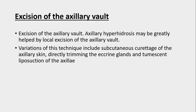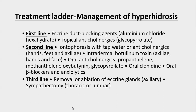Excision of the whole axillary vault will remove all sweat glands and cure axillary hyperhidrosis, though it is a bigger operation. Variations include subcutaneous curettage of the axillary skin, directly trimming the eccrine glands, and tumescent liposuction of the axilla. The treatment ladder for hyperhidrosis: first line — eccrine duct-blocking agents like aluminium chloride hexahydrate and topical anticholinergics like glycopyrrolate; second line — iontophoresis, intradermal botulinum toxin, oral anticholinergics like propantheline, oxybutynin and glycopyrrolate, oral clonidine, oral beta blockers, and anxiolytics; third line — removal and ablation of eccrine glands, axillary or sympathetically.